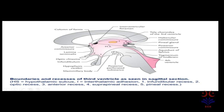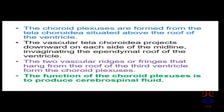All the boundaries are shown in the labeled picture: lamina terminalis, optic chiasma, infundibulum, hypophysis cerebri, cerebral aqueduct, and the interventricular foramen. The sulcus extends from the interventricular foramen to the cerebral aqueduct, and the tela choroidea of the third ventricle is also visible. The choroid plexuses are formed from the tela choroidea situated above the roof of the ventricle. The vascular tela choroidea projects downward on each side of the midline, invaginating the ependymal roof of the ventricle, and the two vascular ridges hanging from the roof form the choroid plexuses.